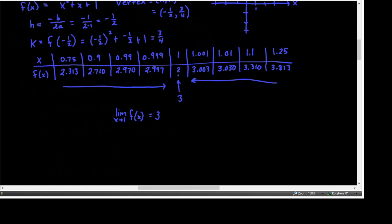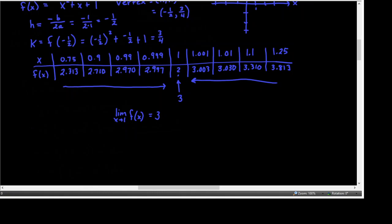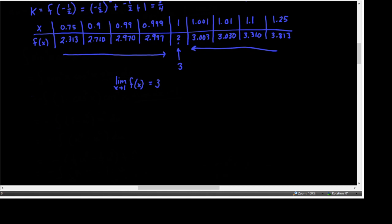So that's a mathematical statement saying that the closer x gets to 1 for this function, the closer the y values are to being 3. Notice it's not 3 at 1 — and that doesn't matter. It's what it's approaching as a y value that matters, not what it actually equals at 1. It's what it's getting closer and closer to as x gets closer and closer to 1. I'm not worried about whether f(1) actually exists; I just want to know what's happening as I get closer and closer to 1.